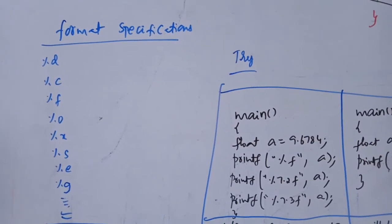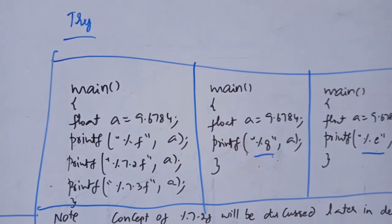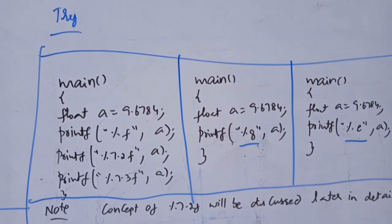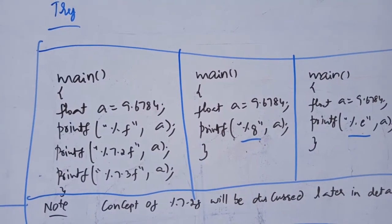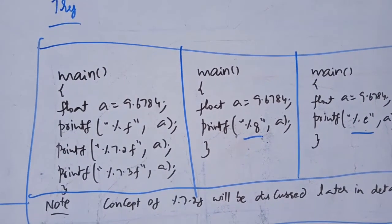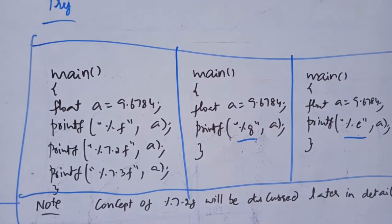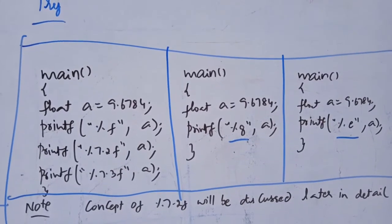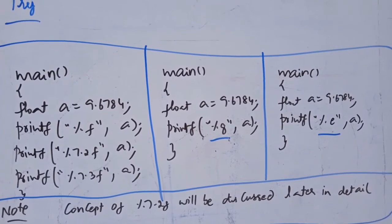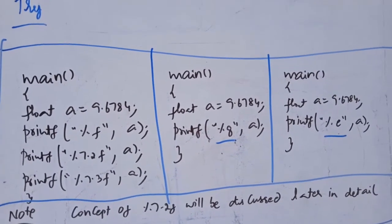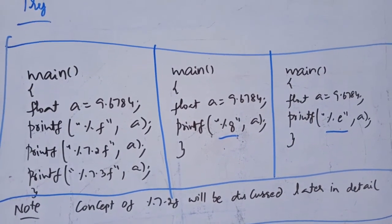Try an APC program. The first program prints float values using %f, %7.2f, and %7.3f. The outputs demonstrate the concept. For further clarification, you can also see %g and %e format specifiers and observe the output to understand your knowledge of these format specifications.